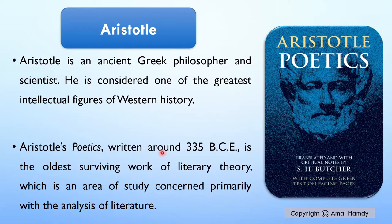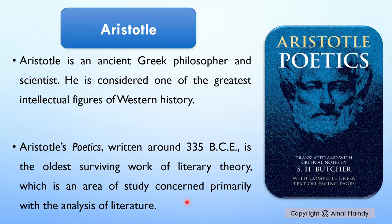Aristotle's Poetics, written around 335 BCE, is the oldest surviving work of literary theory — an area of study concerned with the analysis of literature. Today we are going to focus on two things: number one, how Aristotle's opinions differ from Plato's, and number two, the theory of mimesis.